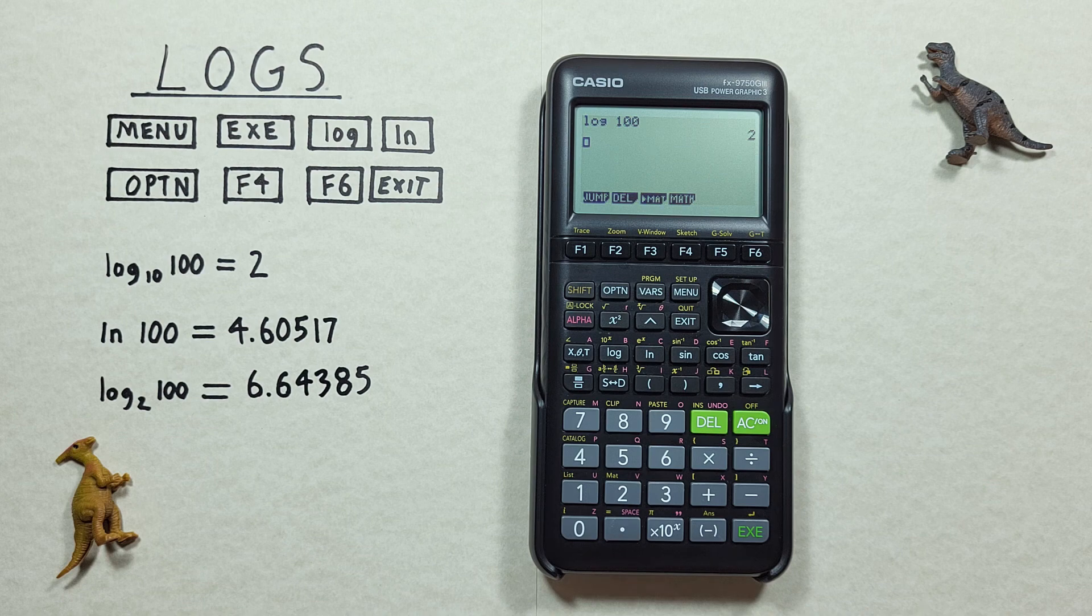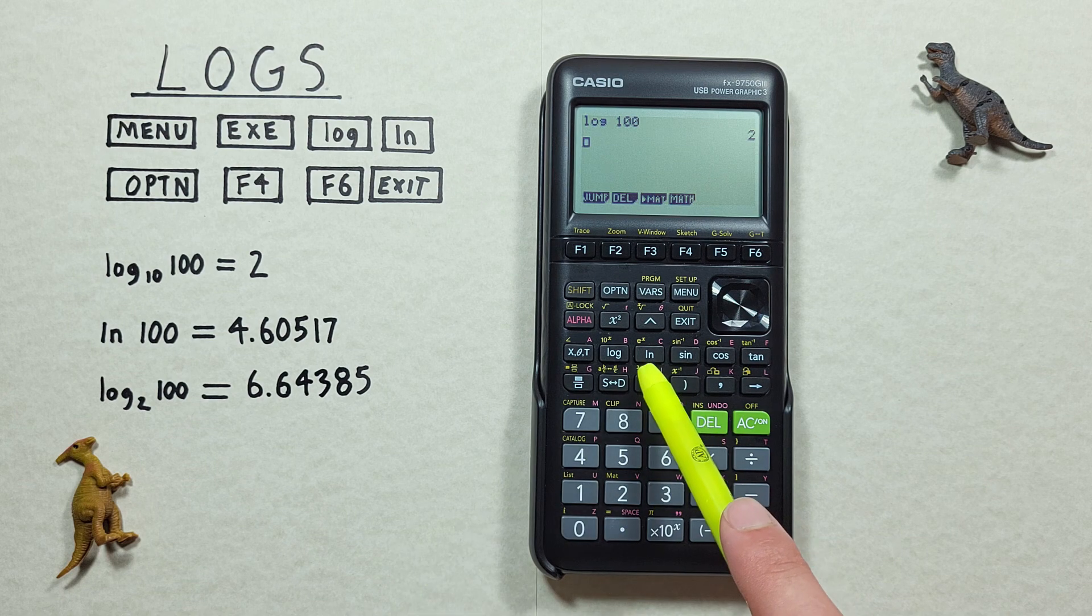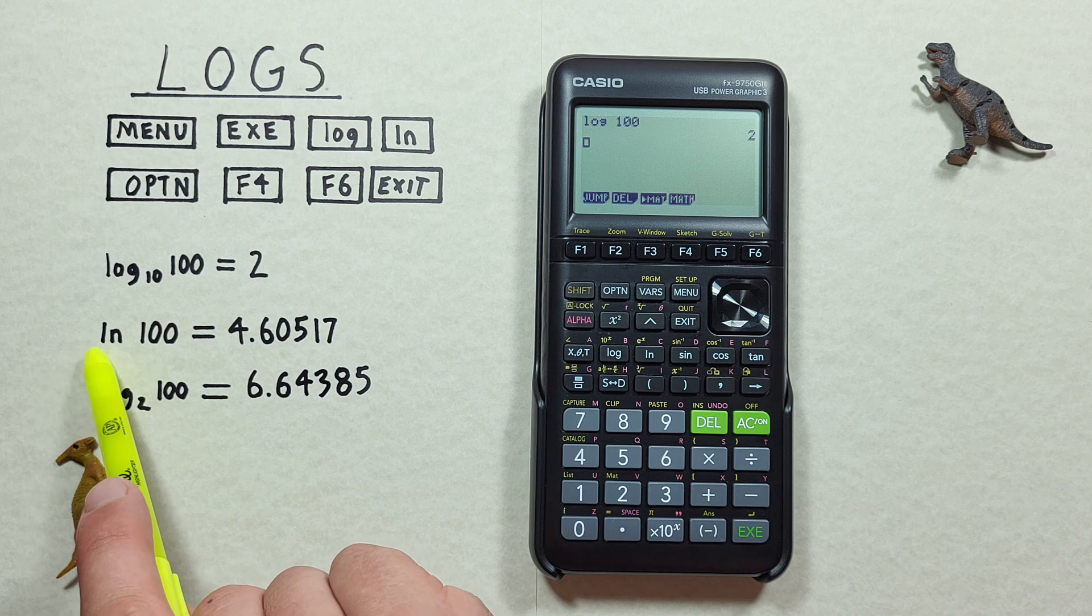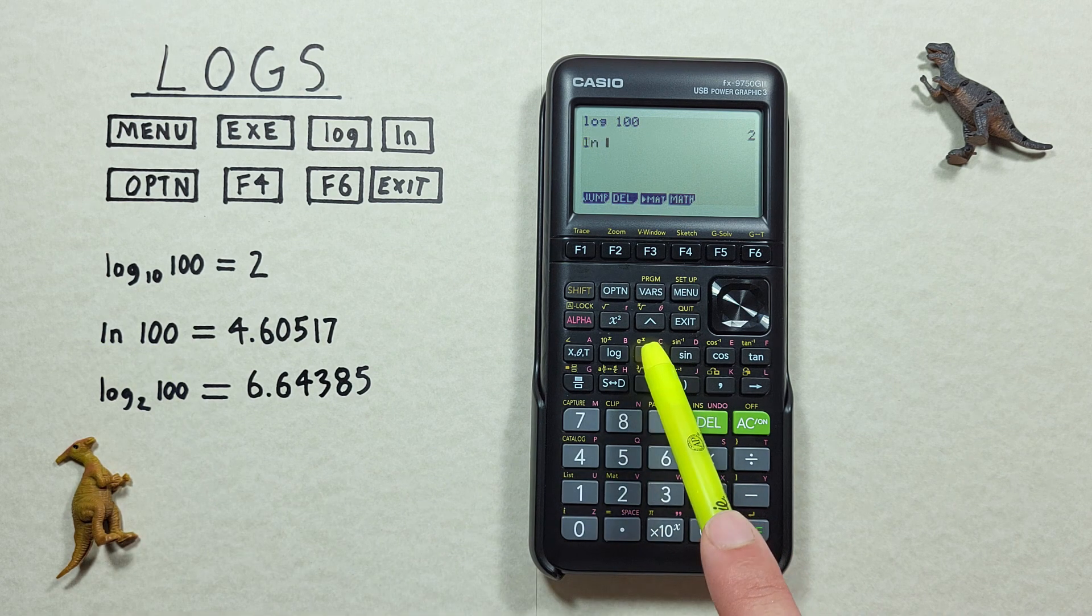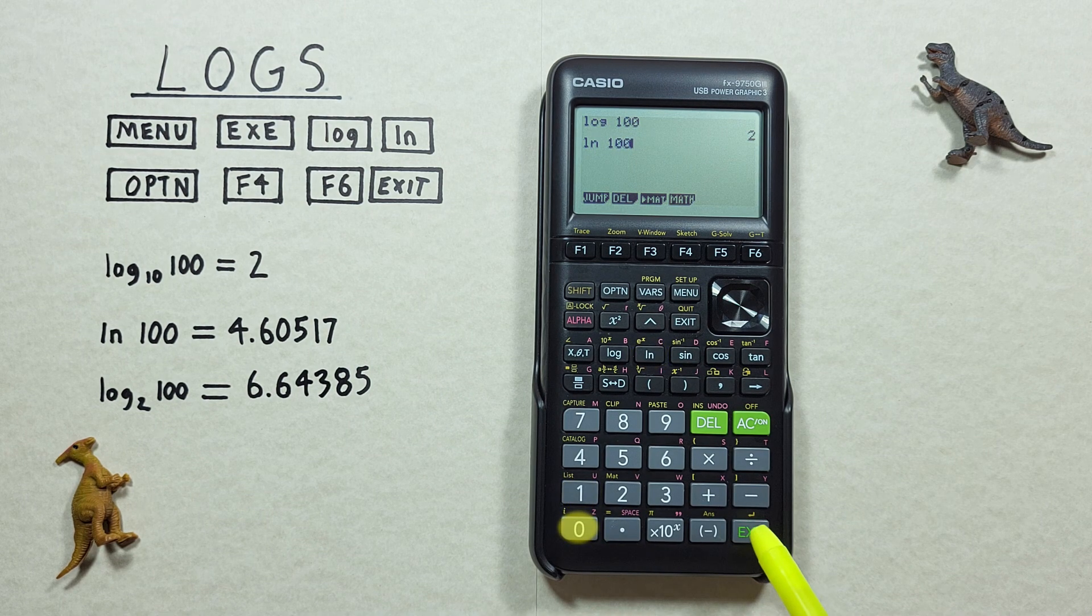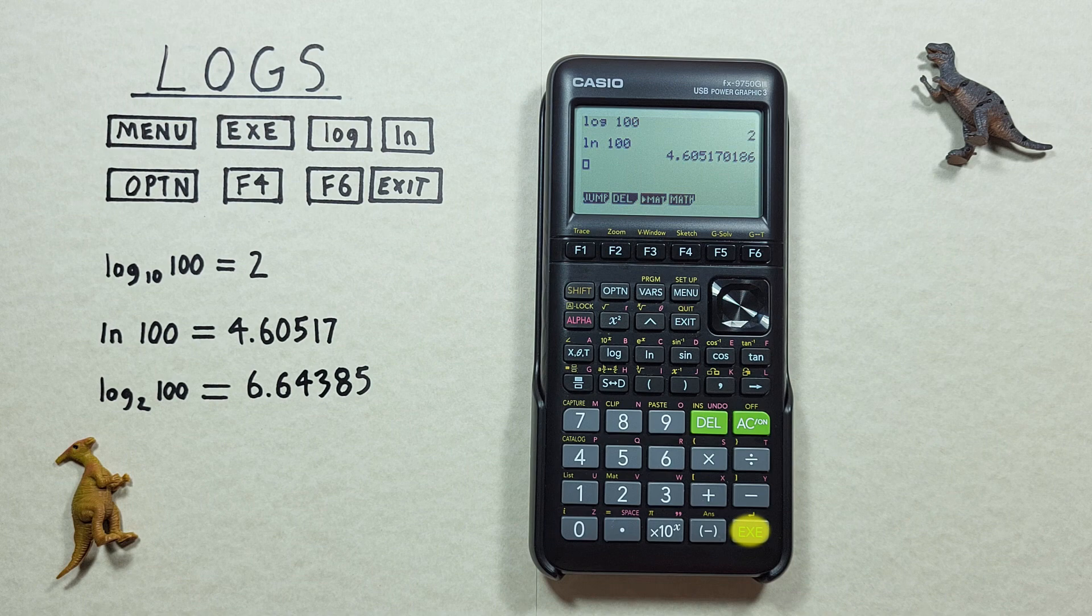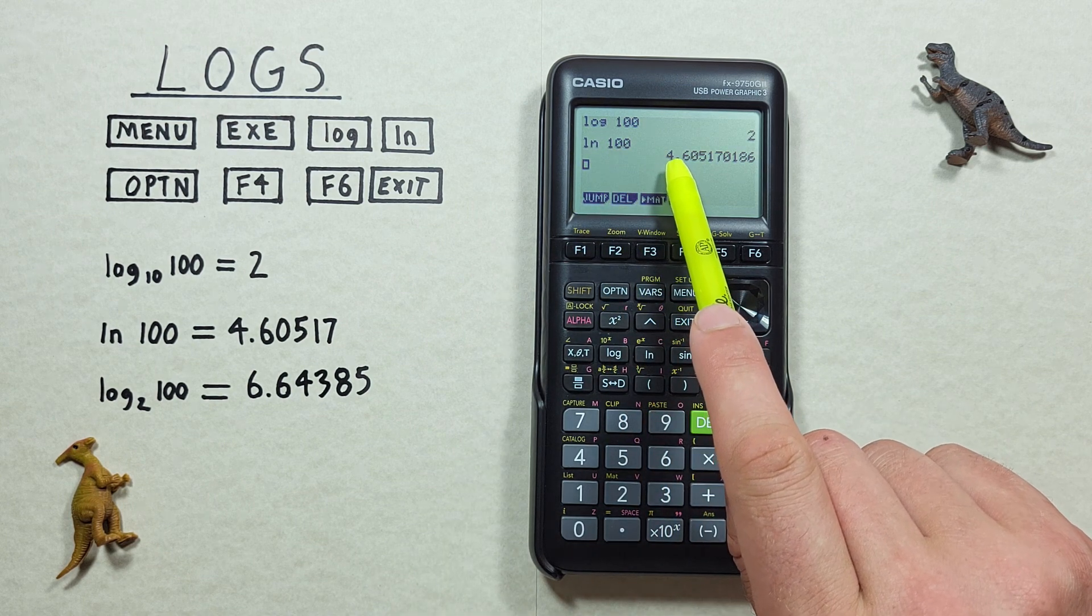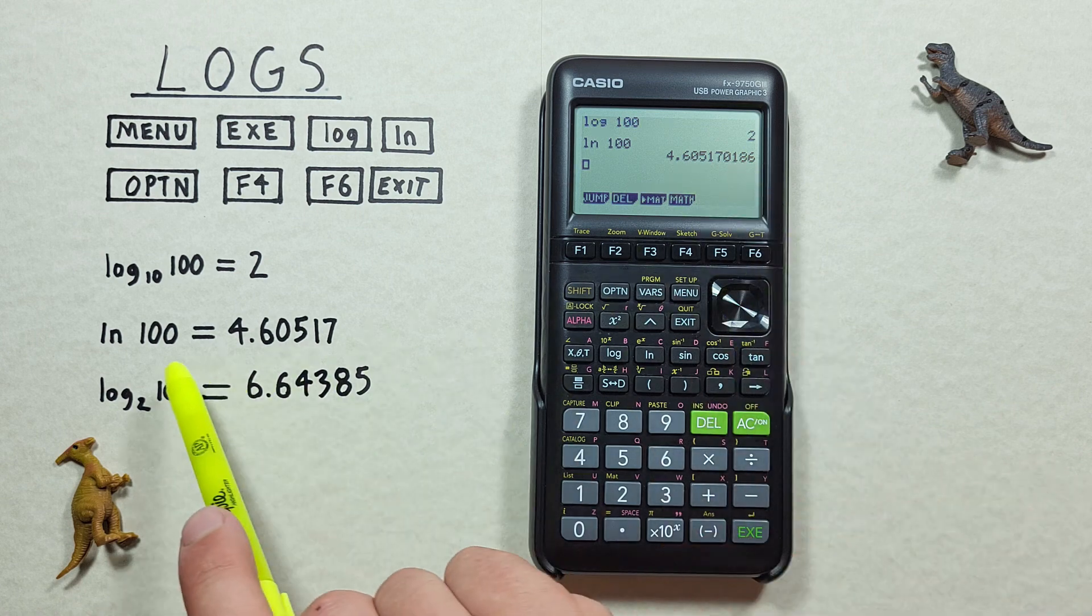If we want to find the natural log of a number, we use the ln key. So if we want to find the ln, or natural log of 100, we press the ln key, and then 100, and press the EXE, and we see we get the natural log of 100 is 4.605, etc., which is correct.